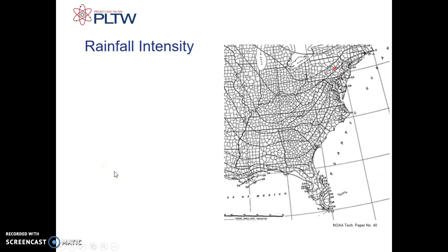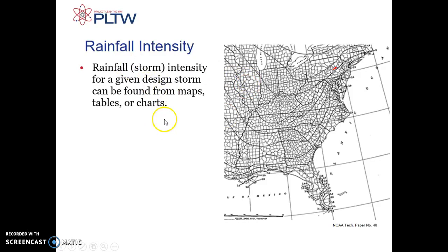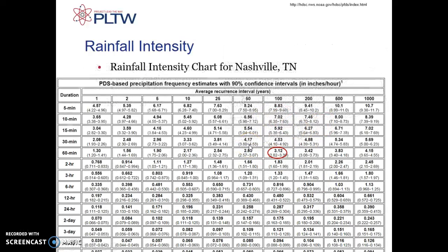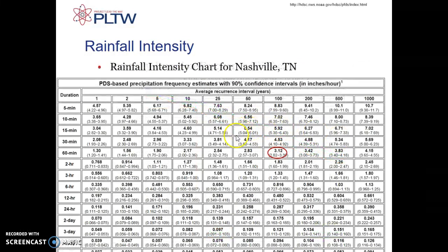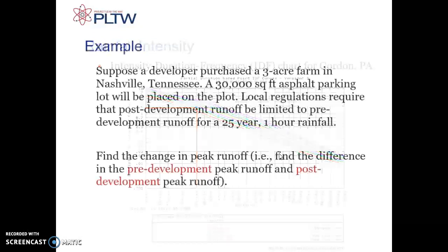Rainfall intensity data comes from maps, tables, or charts. This is a typical map from NOAA, and this is a chart. We're going to be using a chart rather than a map. For instance, a 100-year storm for a 60-minute timeframe gives a factor of 3.12 inches per hour. This chart contains the same information as the map — I prefer this chart version.